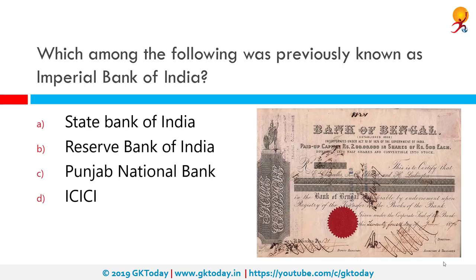Which among the following was previously known as the Imperial Bank of India? The correct answer is the State Bank of India, established in 1806 in Kolkata. Three years later it acquired its charter and was redesigned as the Bank of Bengal in 1809. It was the very first joint stock bank of India, sponsored by the Bengal government.